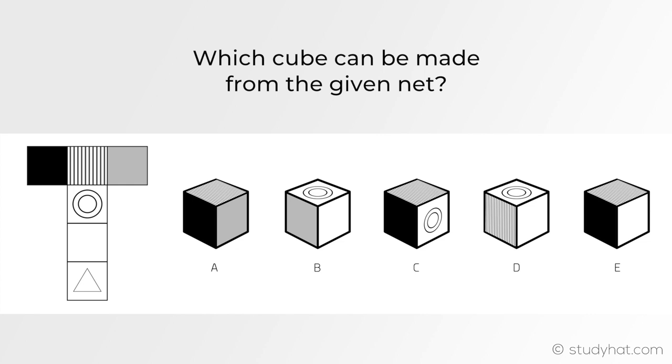Looking at A, it has both sides 2 and 3 next to each other, which therefore is incorrect as opposite sides wouldn't touch each other when folded down. We also have D where opposite sides are together, so that can be eliminated.